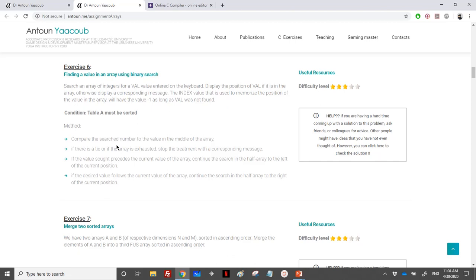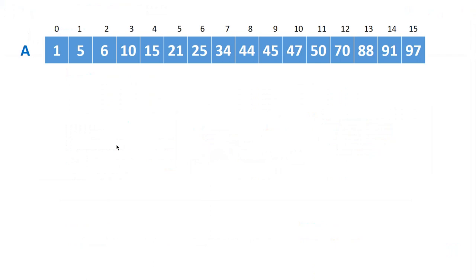Suppose we have this array — it's sorted, called A, and contains 16 elements with indices from 0 to 15. Suppose we want to find 100. In a normal sequential search, we start from index 0 and traverse the entire array until we reach the end, only to not find the value. That requires 16 tests to check whether the element exists.